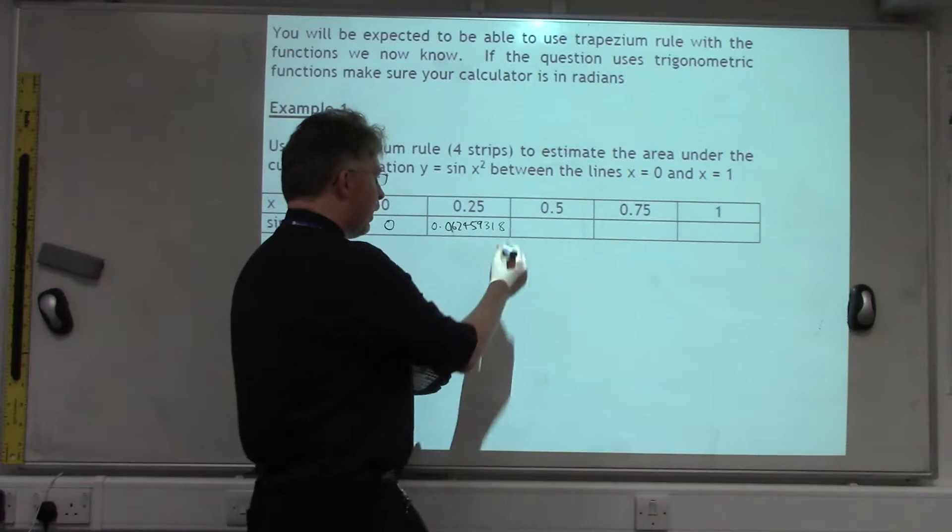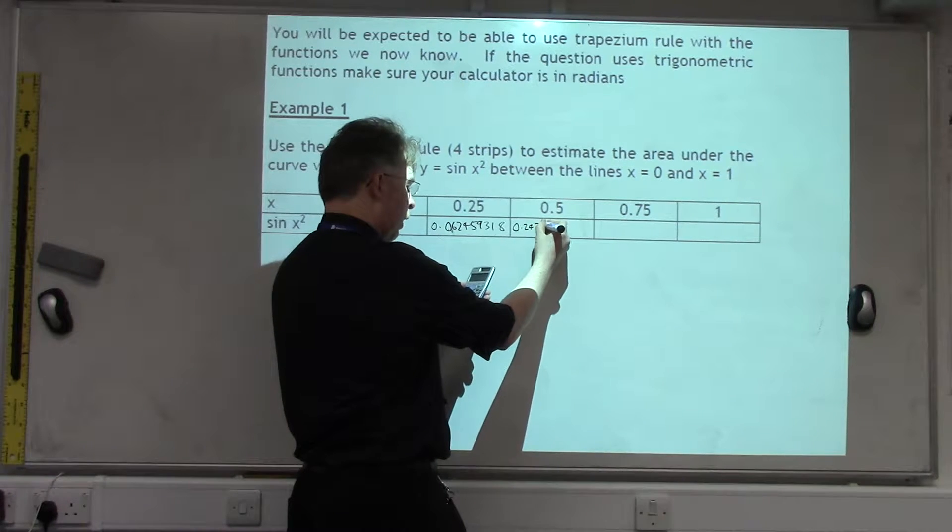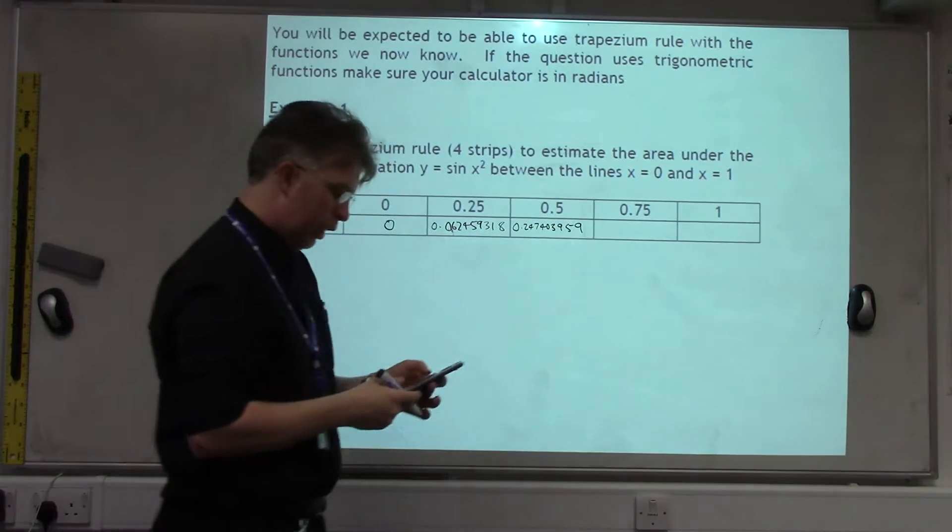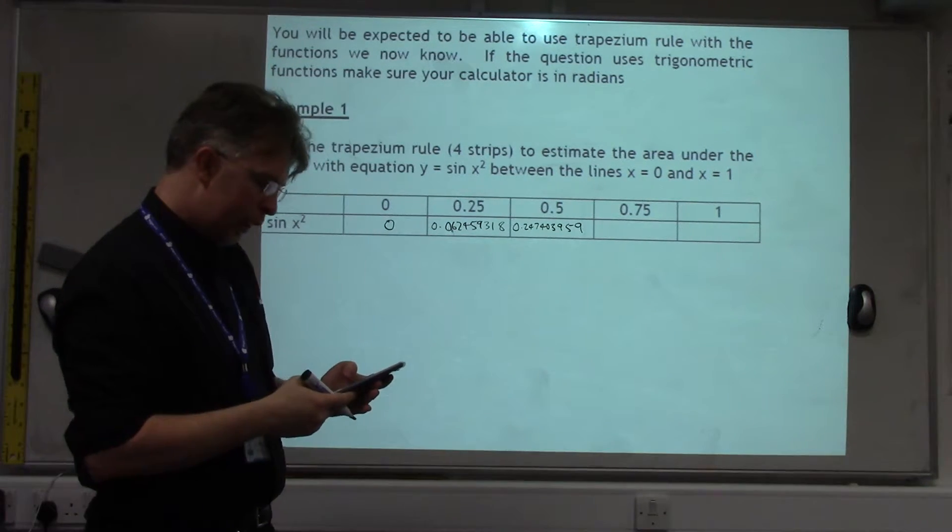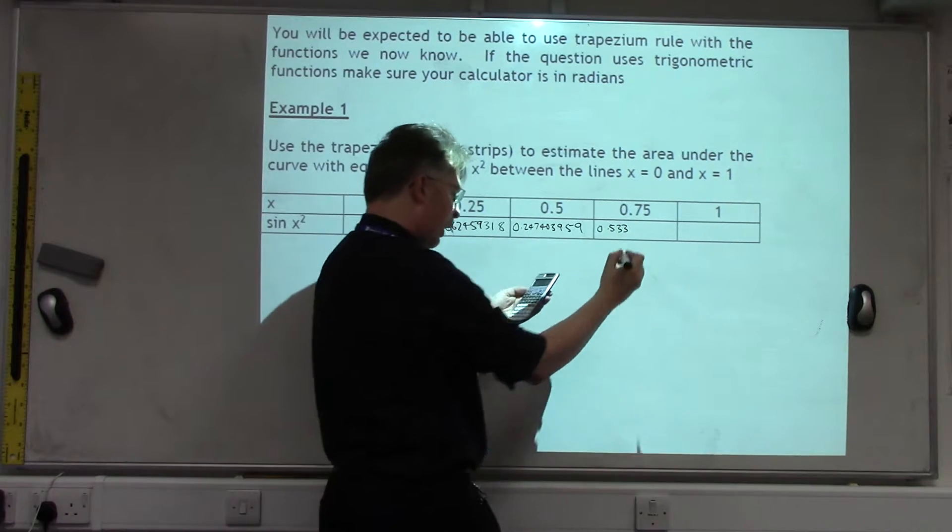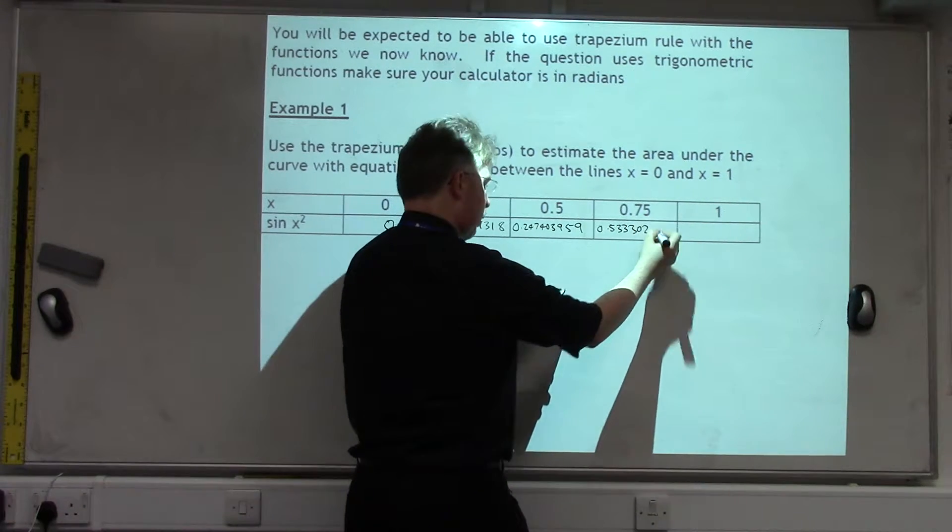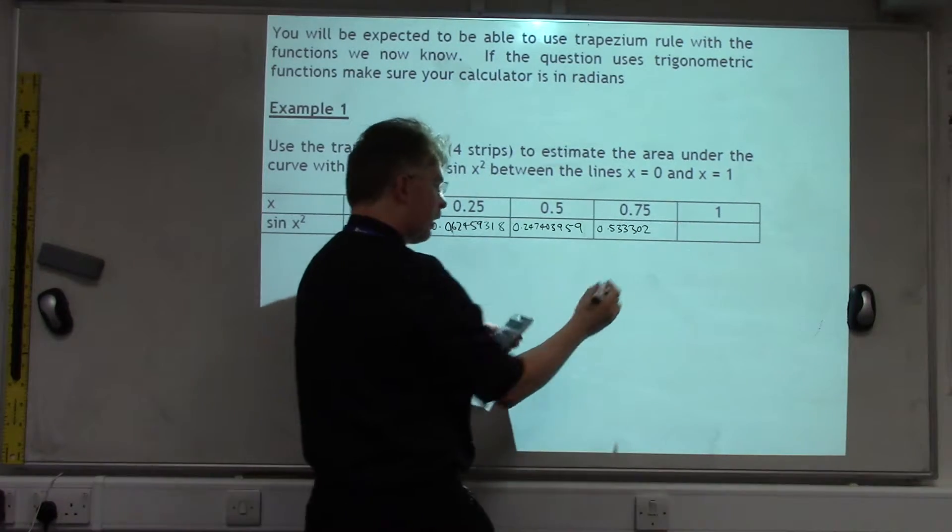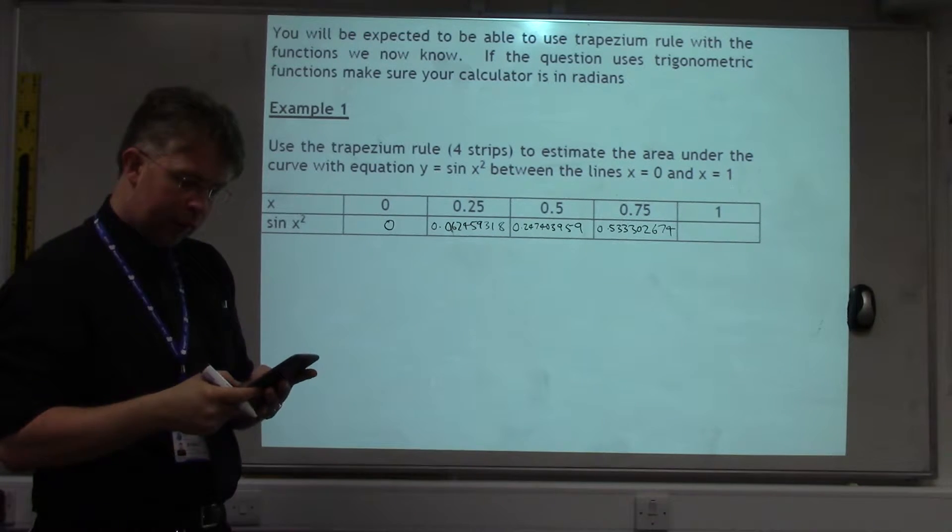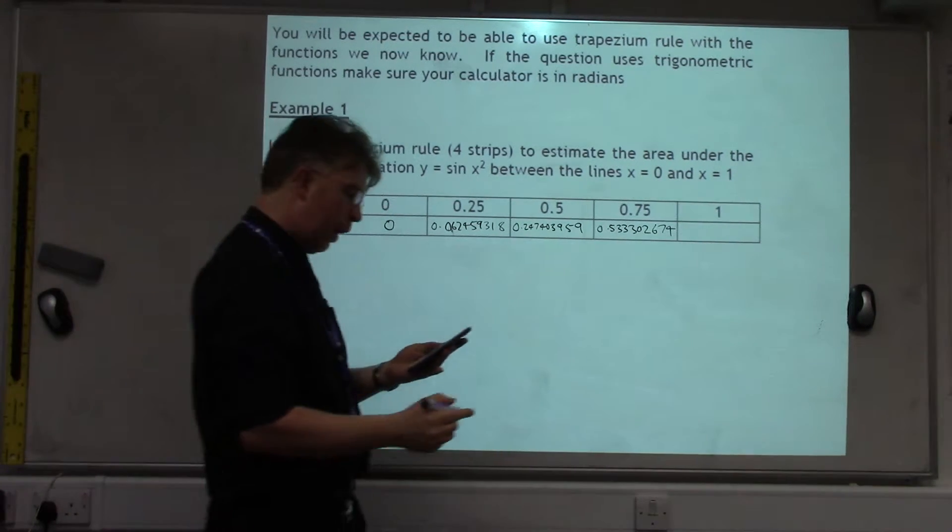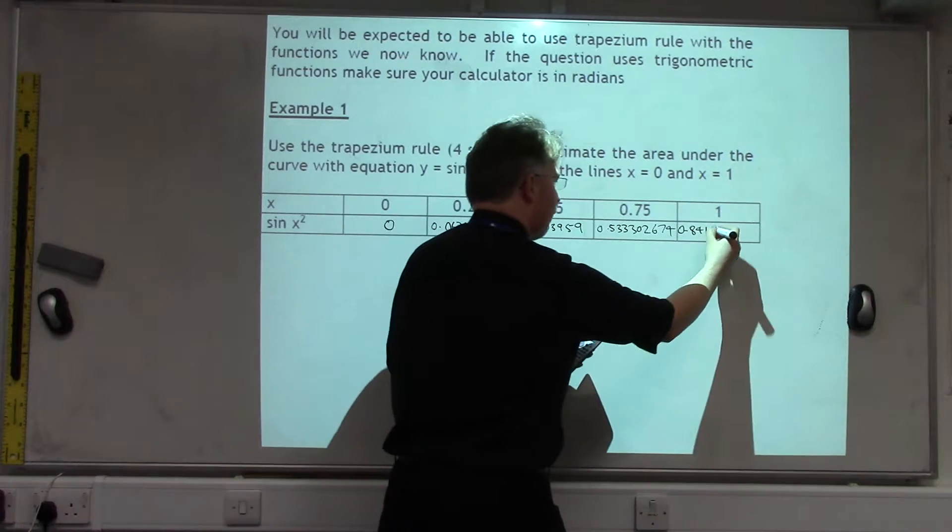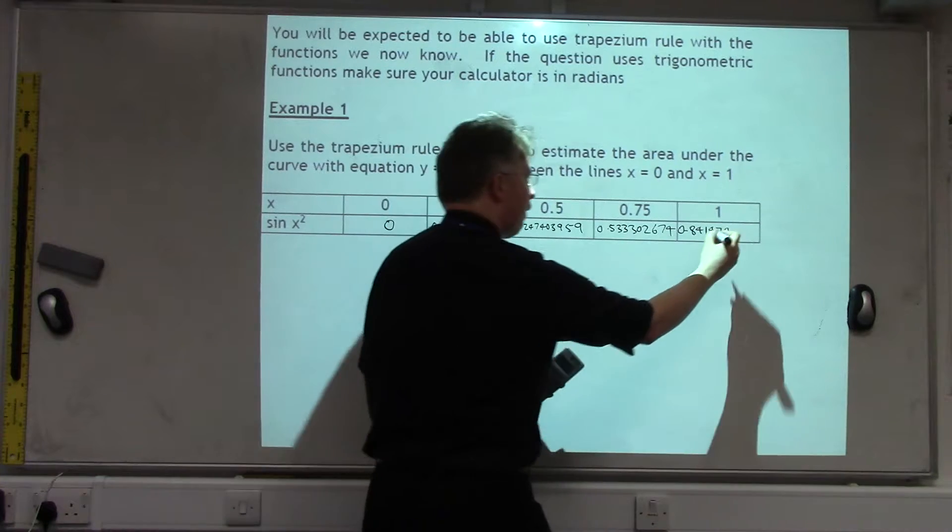Sin 0.5 squared is 0.247403959, sin 0.75 squared is 0.533302674, and finally sin 1 squared is 0.841470985, all to nine decimal places.